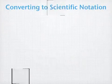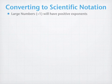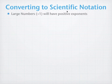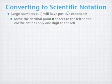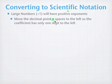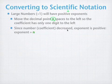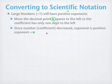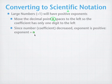Let's look at how to convert from decimal notation to scientific notation. Large numbers will have positive exponents. If your number is greater than 1, take the decimal point — or the implied decimal point — and move it n spaces to the left. This n becomes your exponent. You decreased the coefficient by n powers of 10, so the exponent increases by n, making it positive.